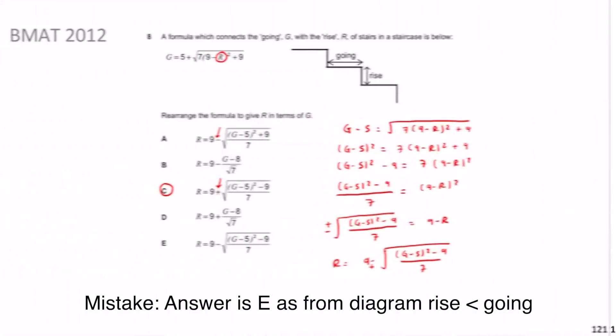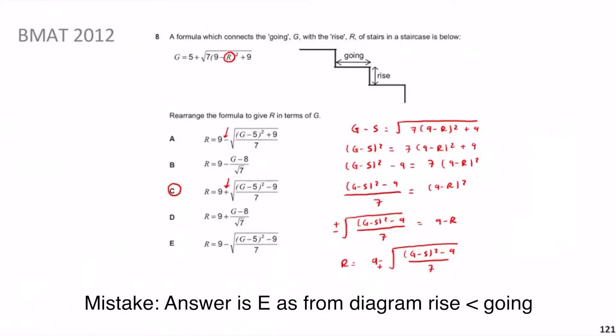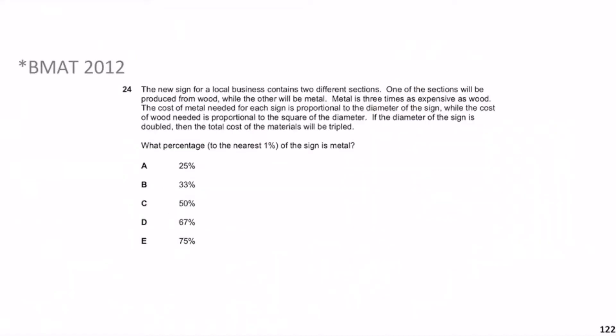Previously we looked at BMAT 2012 question 8 — rearranging an equation. Hopefully the individual steps weren't too difficult, though overall it could have been quite hard given the number of steps involved in one minute. Don't worry if you couldn't do it in a minute — some other questions will save you time. Now we move on to BMAT 2012 question 24, which I'd give a two-star difficulty rating as it's quite a hard question.